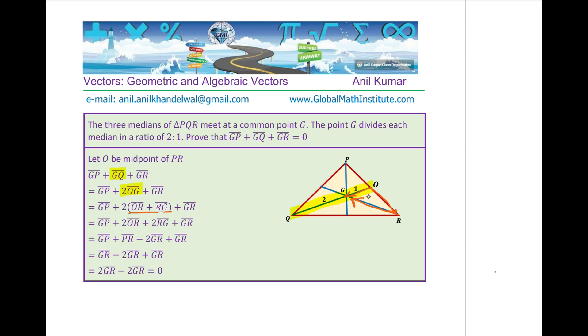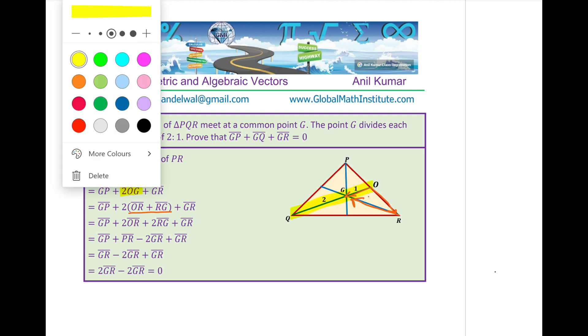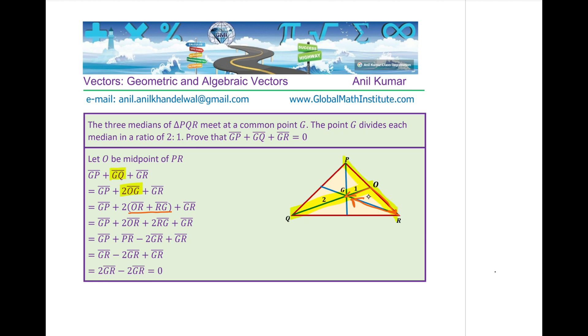Open the bracket. And then we get 2OR and 2RG. Twice OR means what? Twice O to R means P to R, correct? Twice OR means P to R. And therefore, that has been replaced by PR.